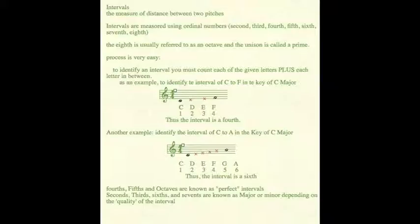The process for naming intervals is, all you have to do is count each of the given letters plus each letter in between. As an example, to identify an interval of C to F in the key of C major, what we do is we start on C, and we count D and E and F.